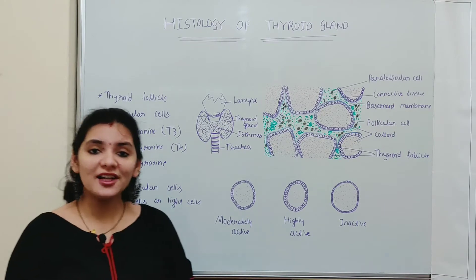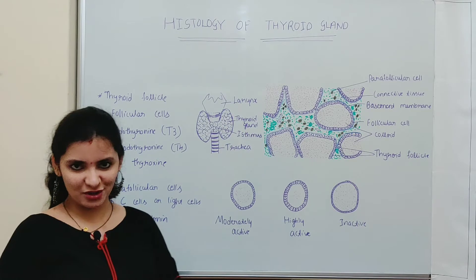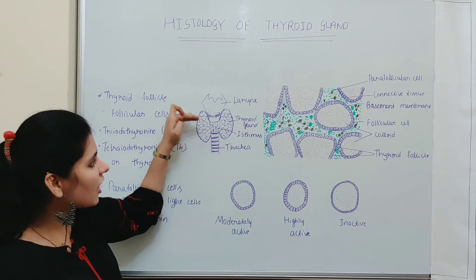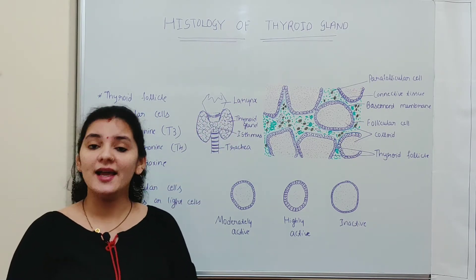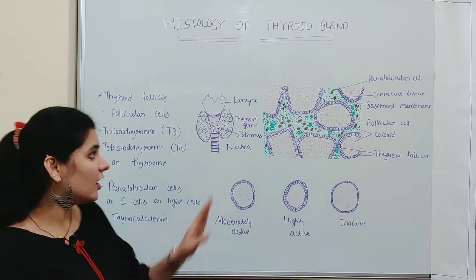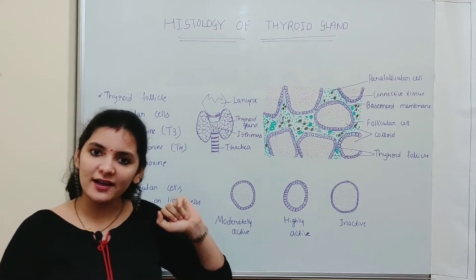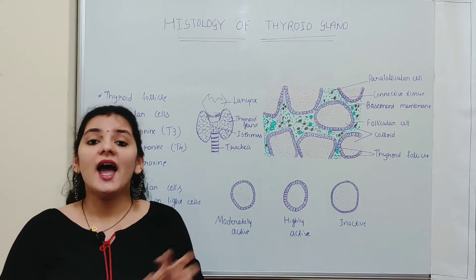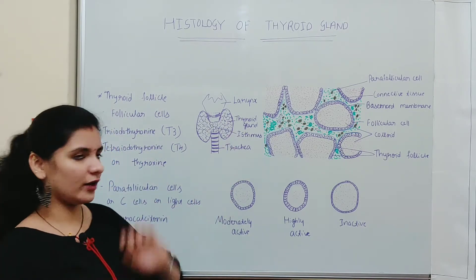As is true with other organs or glands, the thyroid gland is covered by a layer of connective tissue capsule. This connective tissue capsule sends septa or trabeculae into the parenchyma part of the thyroid gland, which divides it into small lobes and lobules consisting of the tissues of the thyroid gland.